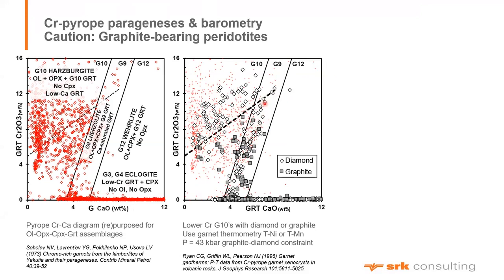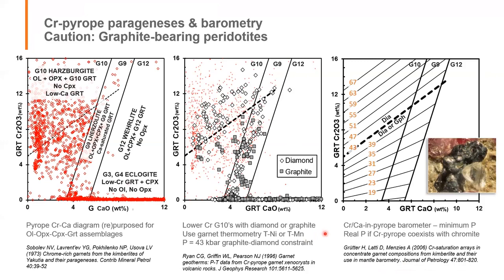To separate diamond association below the graphite-diamond constraint line from graphite association also below the line, a temperature indicator must be used — either nickel temperatures or manganese temperatures in garnet. This barometer gives a minimum pressure from garnet composition alone if you assume the geotherm. The work is available online in a 2006 Journal of Petrology paper, published with thanks to De Beers for allowing publication of this important repurposing of the chrome-calcium diagram in terms of phase equilibrium.